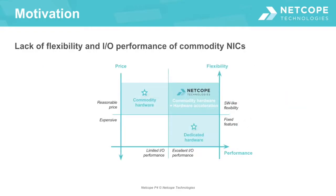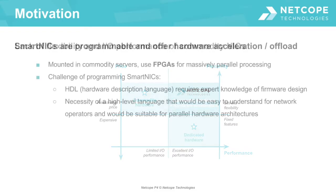While commodity network interface cards have fixed features and lack flexibility and input-output performance, smart network interface cards can overcome this limitation by using reprogrammable hardware and still stay usable in commodity servers. Here at NetCoop Technologies we use such smart NICs, which are based on FPGA chips, and program them.